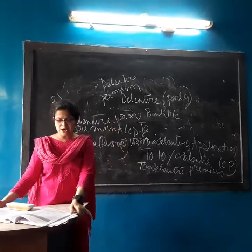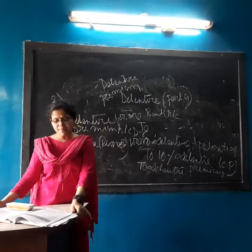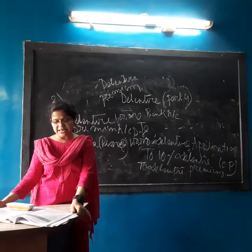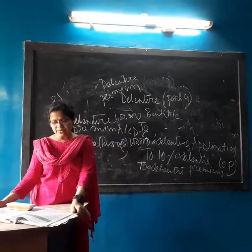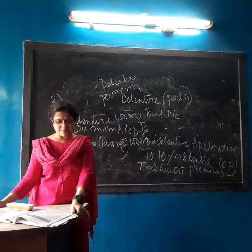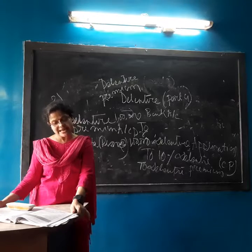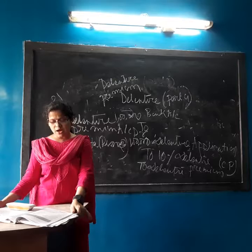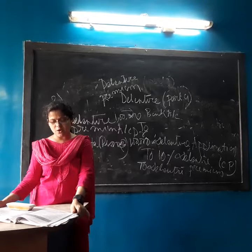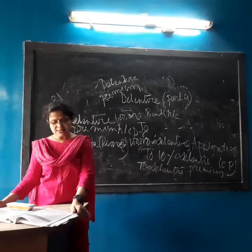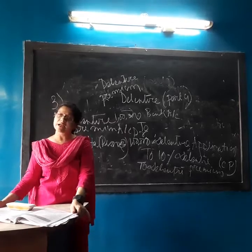Example: X Limited issued 10% debentures of ₹100 each at a premium of 10%, payable in full on application by 31st March 2018. The issue was fully subscribed and debentures were allotted on 10th March 2018. Pass the necessary journal entries.